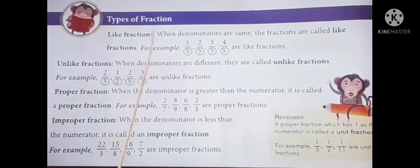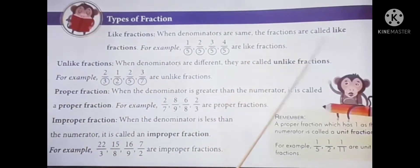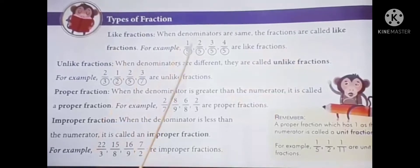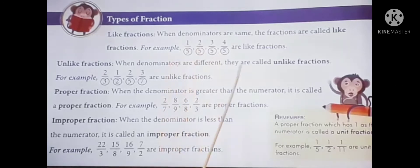Types of fractions. There are so many types in fractions. The first one is like fractions. When denominators are the same, the fraction is called like fractions. For example, take one by five, two by five, three by five, and four by five. In all these fractions, the common denominator is five. That's why these are all called like fractions.